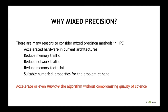To start off, we think about why we're going to do mixed precision in HPC. There are of course many reasons. Current GPUs and other hardware have acceleration specifically for low precision. But there are other reasons as well, such as reducing memory traffic, reducing network traffic, reducing memory footprint. And sometimes you want to change the precision for suitable numerical properties — not just going from single to double precision, but also using integers instead of floating point, for example. The whole goal of mixed precision is really to accelerate or improve the algorithms without compromising the quality of science, to accelerate the time to science.